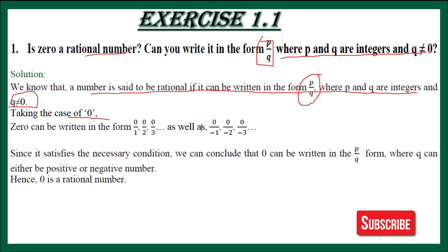Let's discuss this for the case of 0. We can write 0 as 0 upon 1, 0 upon 2, 0 upon 3, and also 0 upon minus 1, 0 upon minus 2, and 0 upon minus 3. Here I have taken positive numbers and here negative ones. All of these are integers and none of them are equal to 0. So, 0 satisfies this condition and we can write 0 in P upon Q form. Numbers that can be written in P upon Q form are called rational numbers. So, 0 is a rational number.